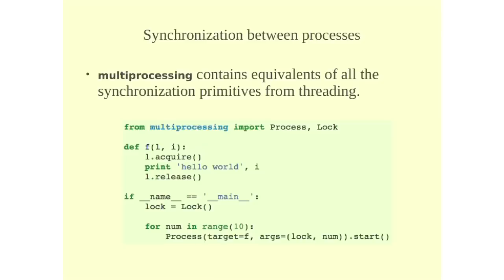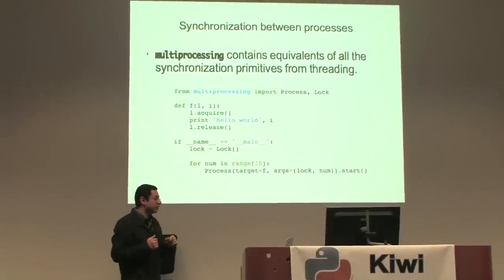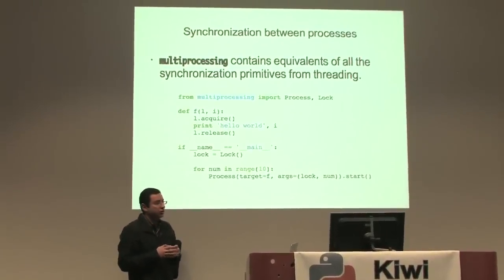Now, synchronization. So in some points, you want to synchronize between your processes. You want to tell a certain function to wait until you finish a certain action so that the other function can execute. And the way to do that is by using locks.